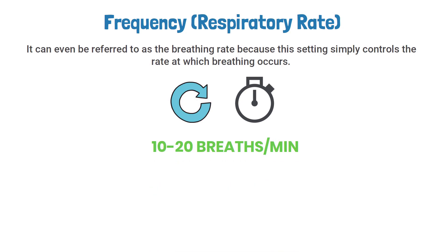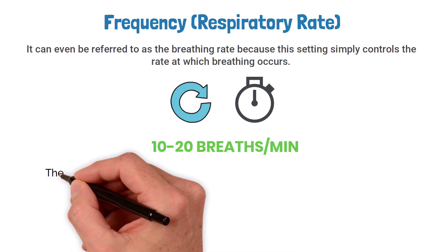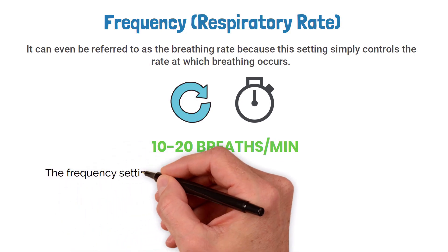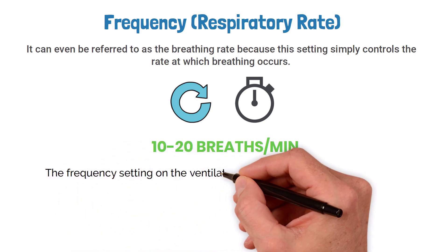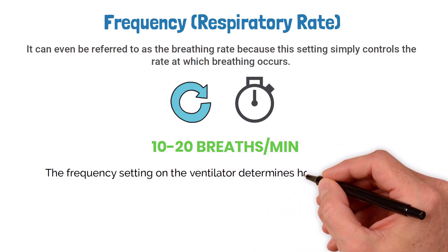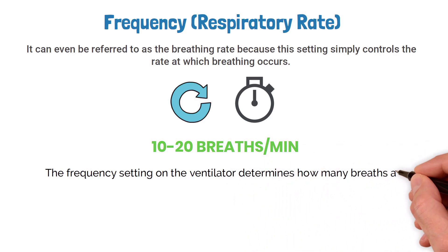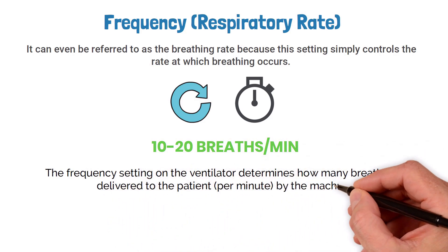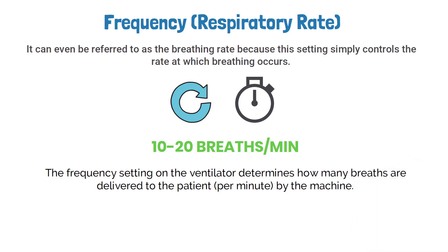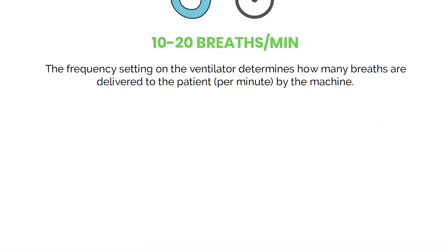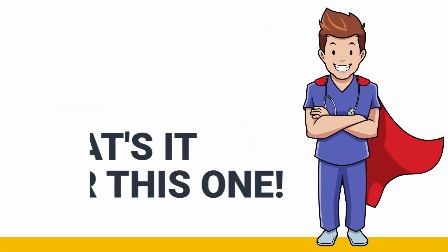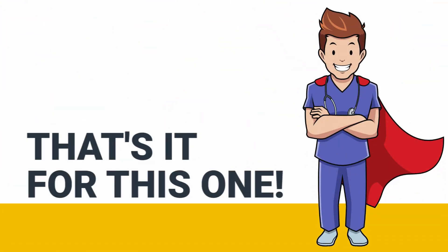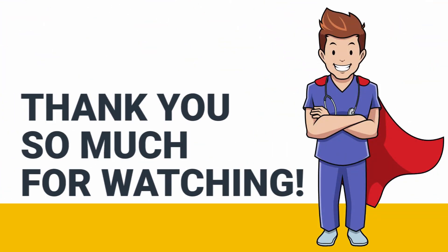It typically refers to the number of breaths that are taken per minute, and the normal range is 10 to 20 breaths per minute. Simply put, the frequency setting on the ventilator determines how many breaths are delivered to the patient per minute by the machine.